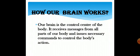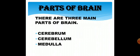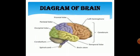Now come to the parts of brain. There are three main parts of brain: cerebrum, cerebellum, and medulla. This diagram shows the parts of brain: cerebrum, cerebellum, and medulla.